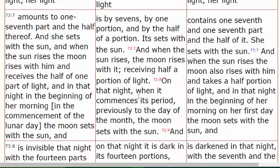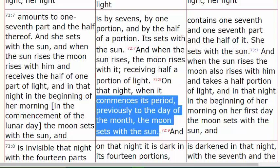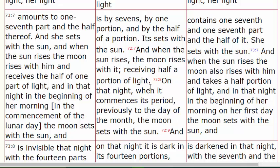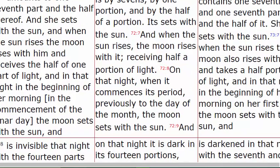It goes on to say: on that night, when it commences its period, previously to the day of the month, the moon sets with the sun. This explains how the moon regulates the month. When that small crescent of the moon appears right after sunset, that is the beginning of the commencement period for that lunar cycle. In other words, the new moon starts the month, is what Enoch is telling us here.